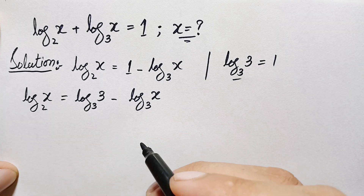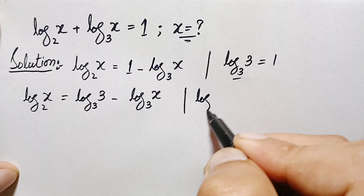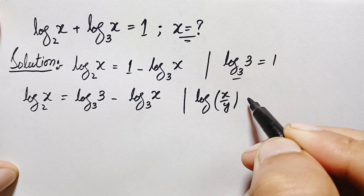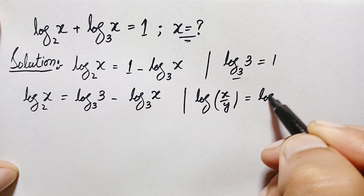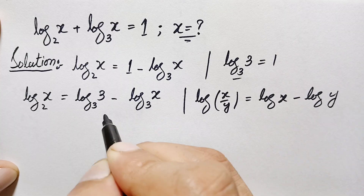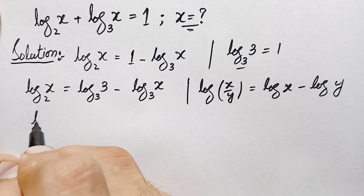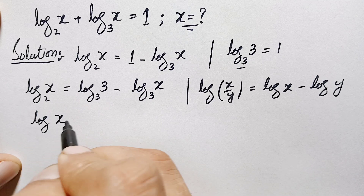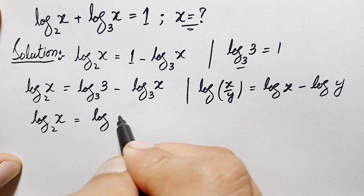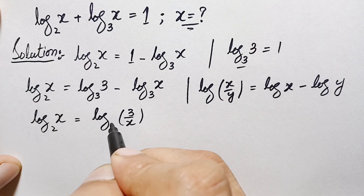On the right hand side we will use another logarithm property: log of x divided by y can also be written as log of x minus log of y. The right hand side is in this form, so this becomes: log of x with base 2 is equal to log of 3/x with base 3.